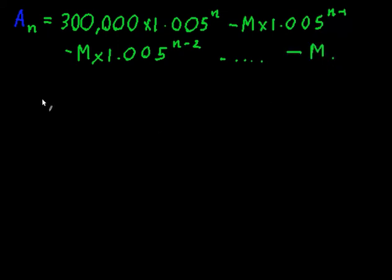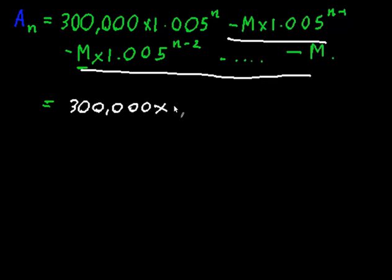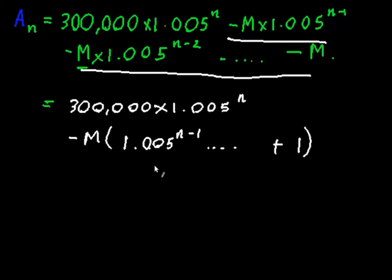So I can factorize the M out from all of these terms, and what I'm going to end up with is 300,000 times 1.005 to the N minus M times 1.005 to the N minus 1 dot dot dot plus 1. In fact, it's actually beneficial to write this the other way around, from 1 to 1.005 all the way up to 1.005 to the N minus 1.